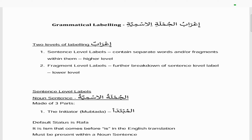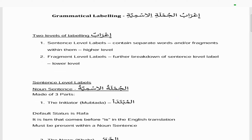There are two levels of labeling. The first is sentence labels, which contain separate words and/or fragments within them — this is called the higher level labeling. Then you have fragment level labels, which further break down the sentence level labels — this is the lower level labeling.